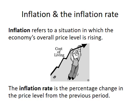Inflation refers to a situation in which the economy's overall price level is rising, and this has to be on a persistent basis — not just a single occurrence where one price has gone up, but an overall persistent rise in the overall price level. Some things may be reducing in price, but overall, looking at an average price for everything, that price is increasing. The inflation rate is the percentage change in the price level from the previous period.